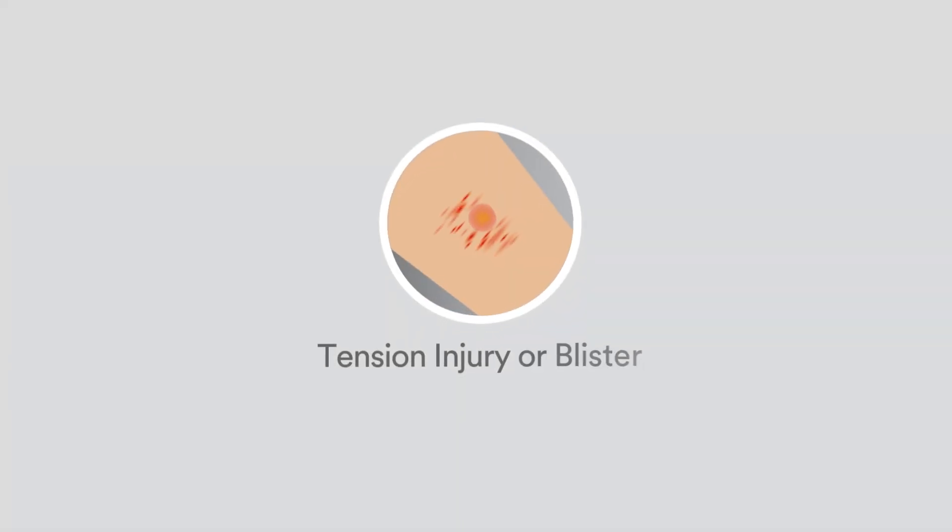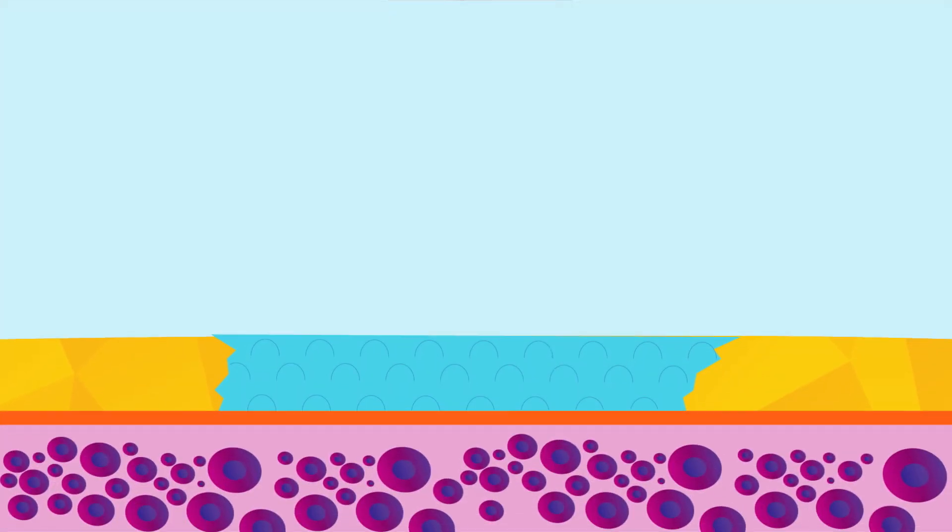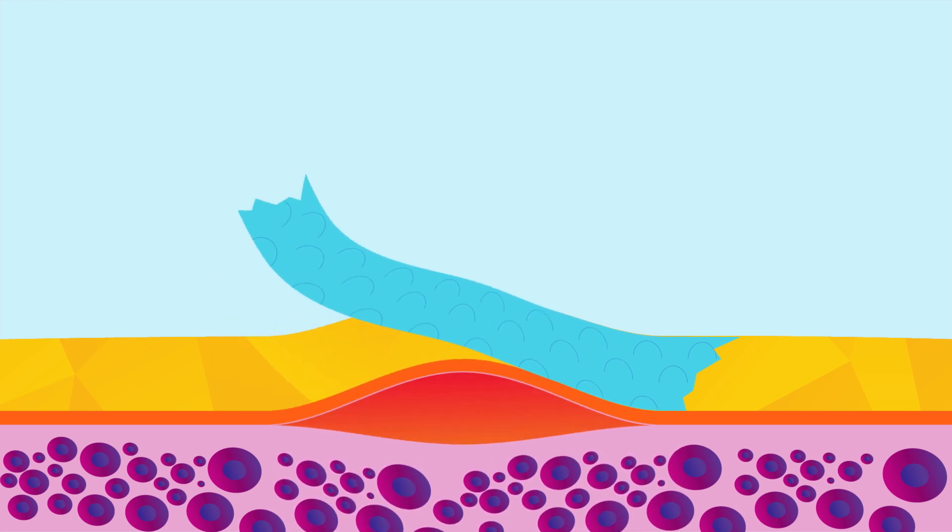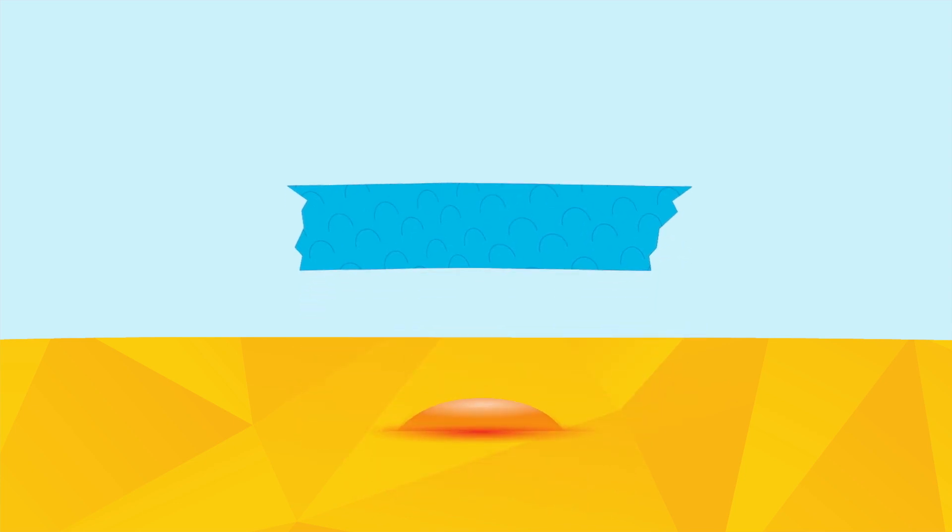Tension injuries or blisters are caused by separation of the epidermis from the dermis as a result of distension of skin under an unyielding adhesive. To help prevent this, never pull too tightly when applying an adhesive. As the tape relaxes it pulls the skin with it, leading to a blister.